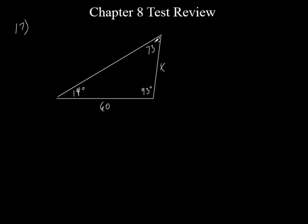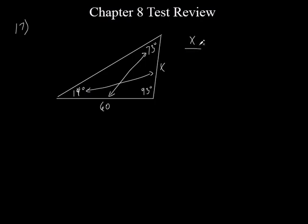So this angle up here is 73 degrees. This isn't drawn to scale, but that's fine. Now we can see something — I've got an angle and a side opposite each other, and I've got another angle and can find the opposite side. So law of sines is what we'll use. Let's go x over the sine of 14 equals 60 over the sine of 73.